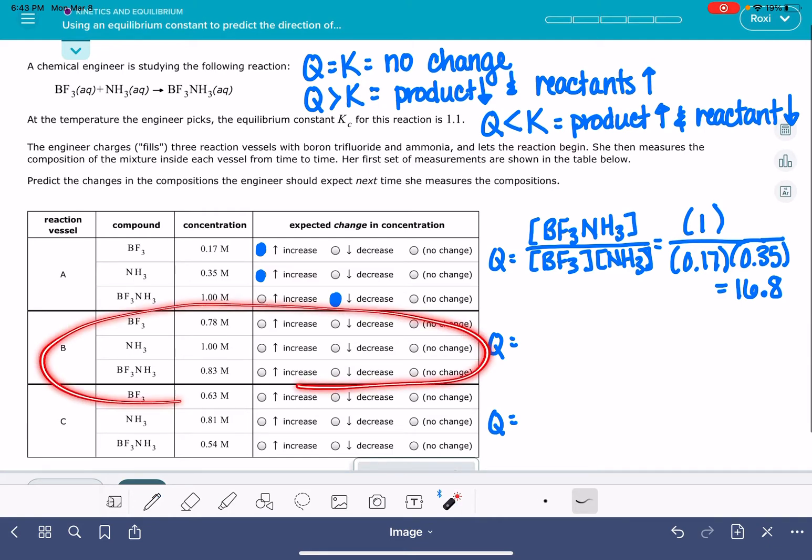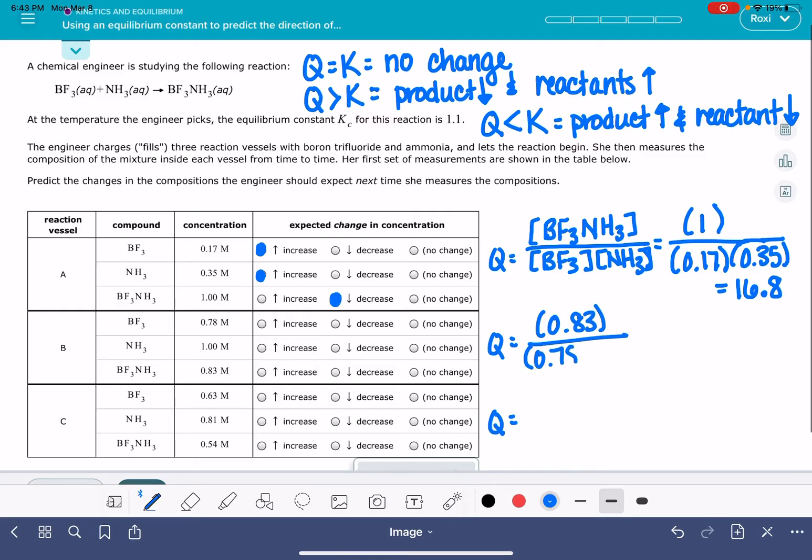So for our next data set, we want our BF3NH3 concentration on top. That is 0.83. Our BF3 on the bottom is 0.78, and our NH3 is 1. We're going to work this out and see what we get.